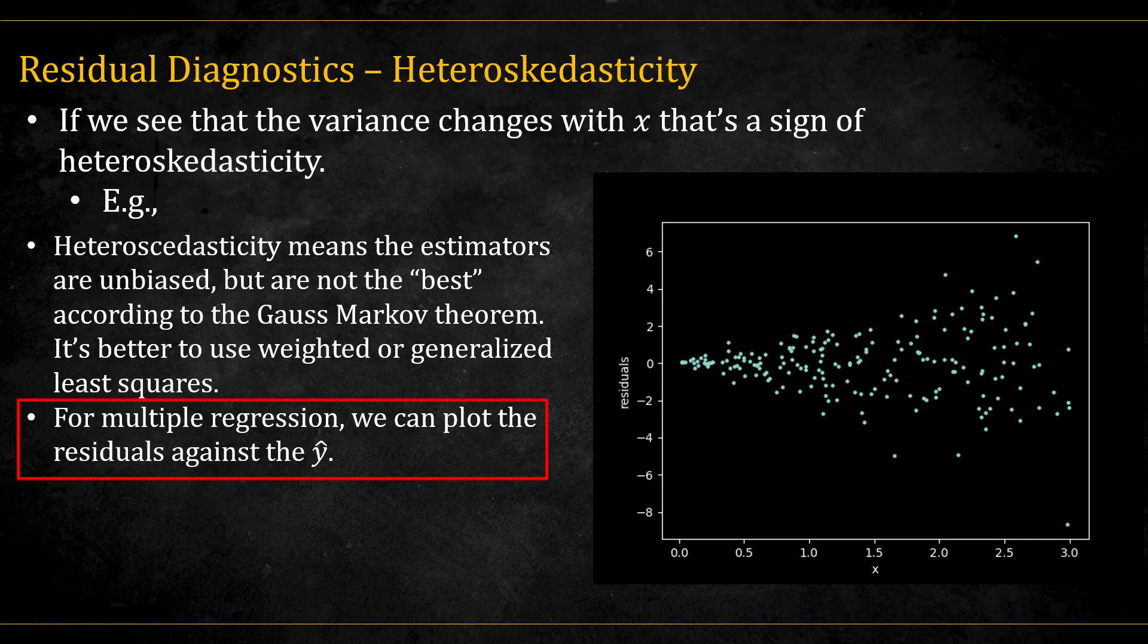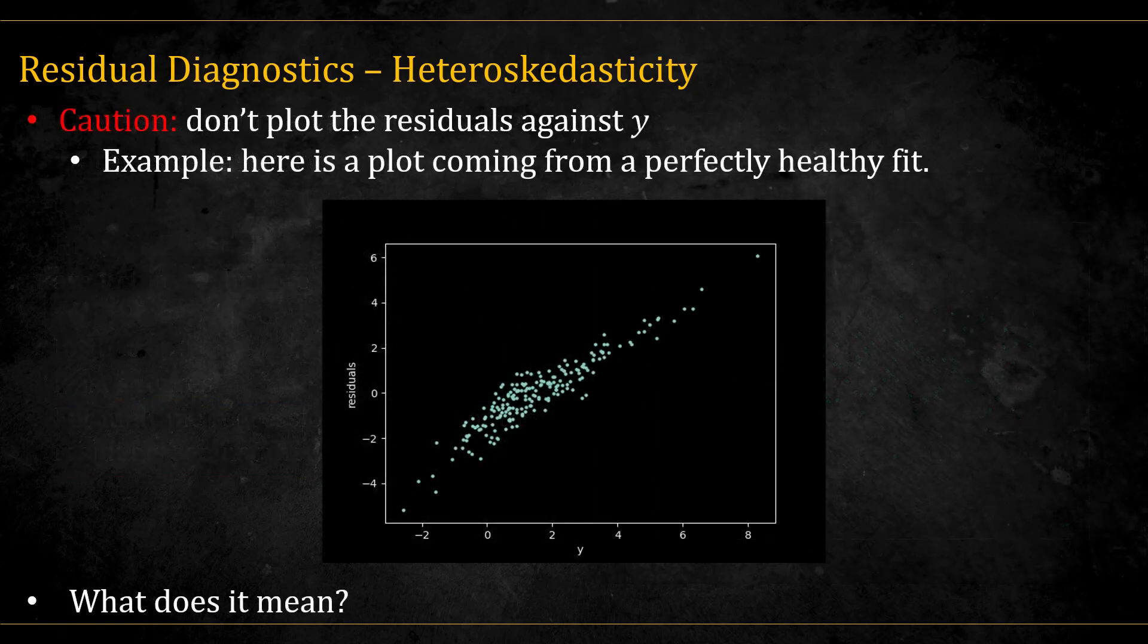For multiple regression, we can plot the residuals against the estimated y's. Be cautious not to mix y hat with y and plot the residuals against the y. Here is an example of such plot coming from a perfectly healthy fit. We see a clear pattern. The points seem to arrange themselves on the y equal x line. What does this mean?